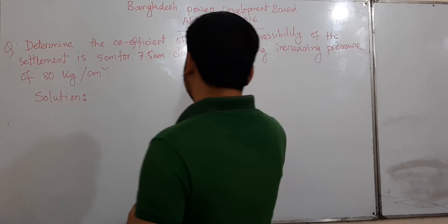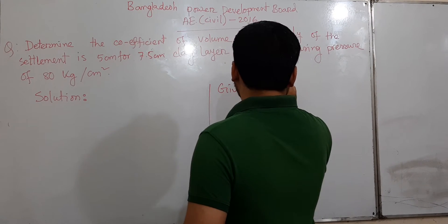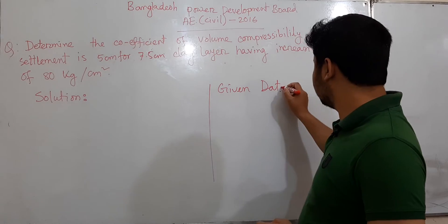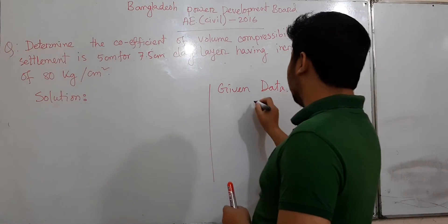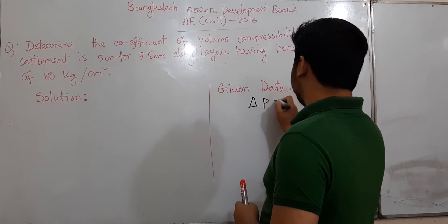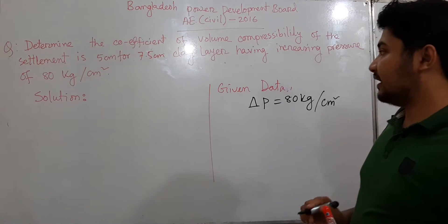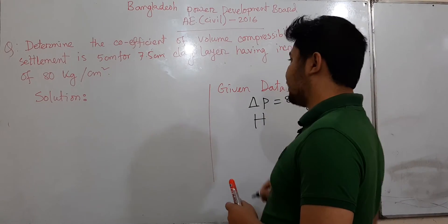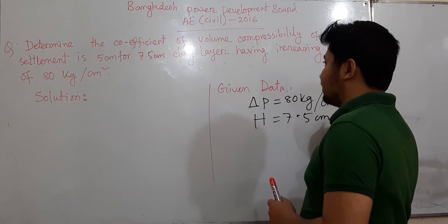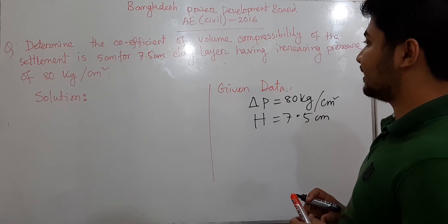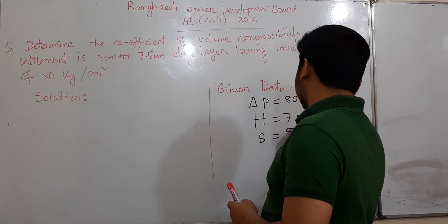Let me write the given data. The increasing pressure ΔP equals 80 kg per cm². The clay layer depth and height is 7.5 cm. The settlement is 5 cm.